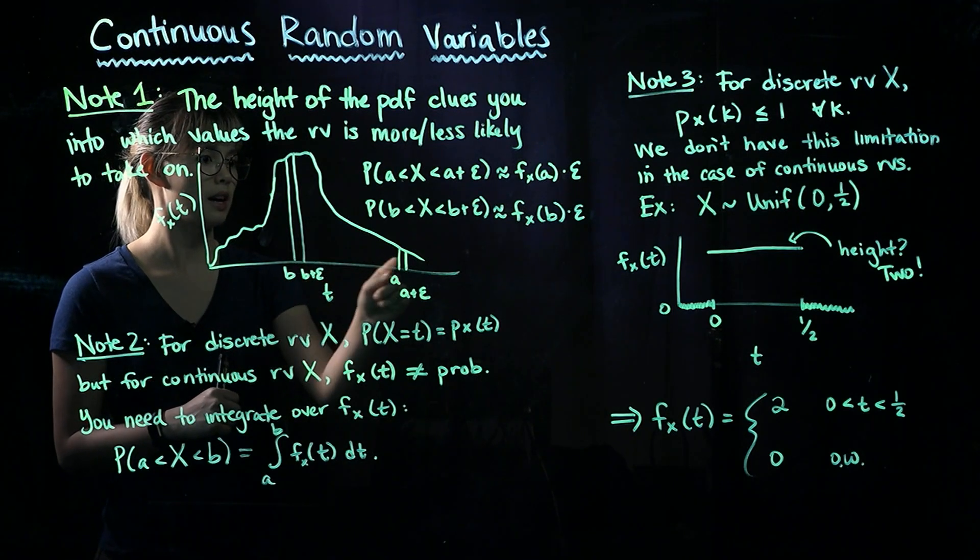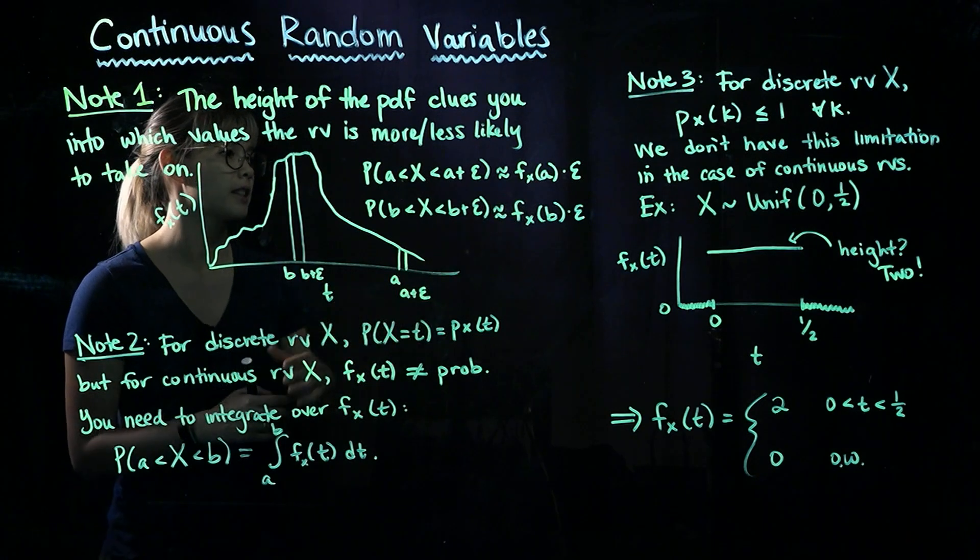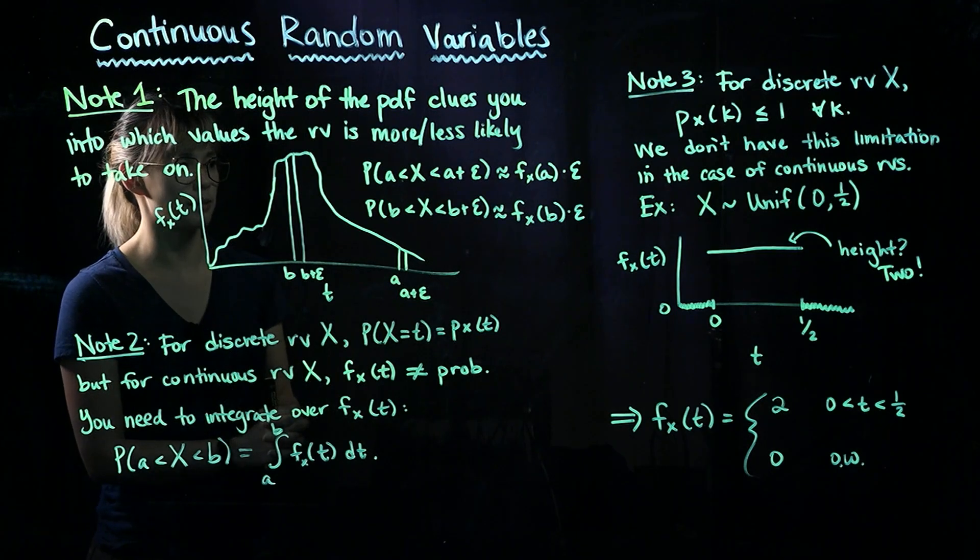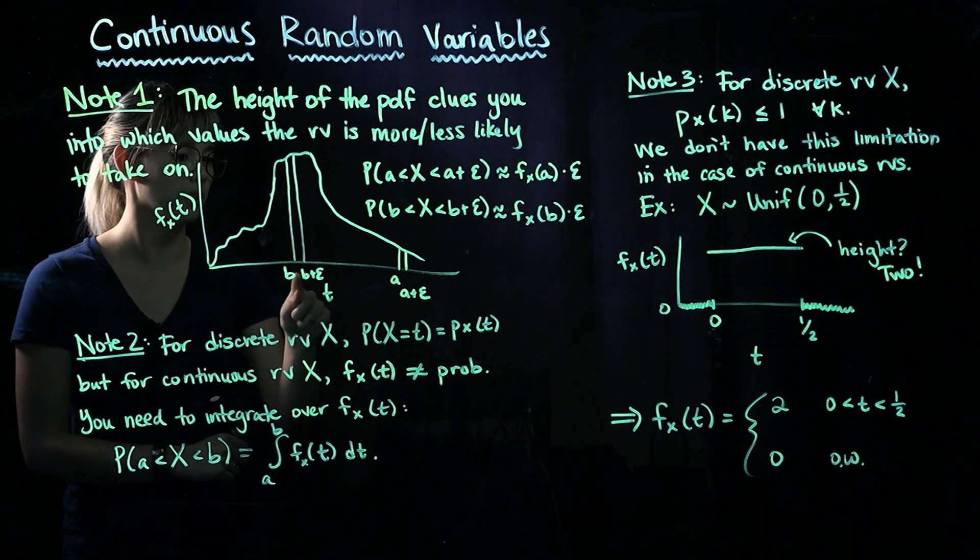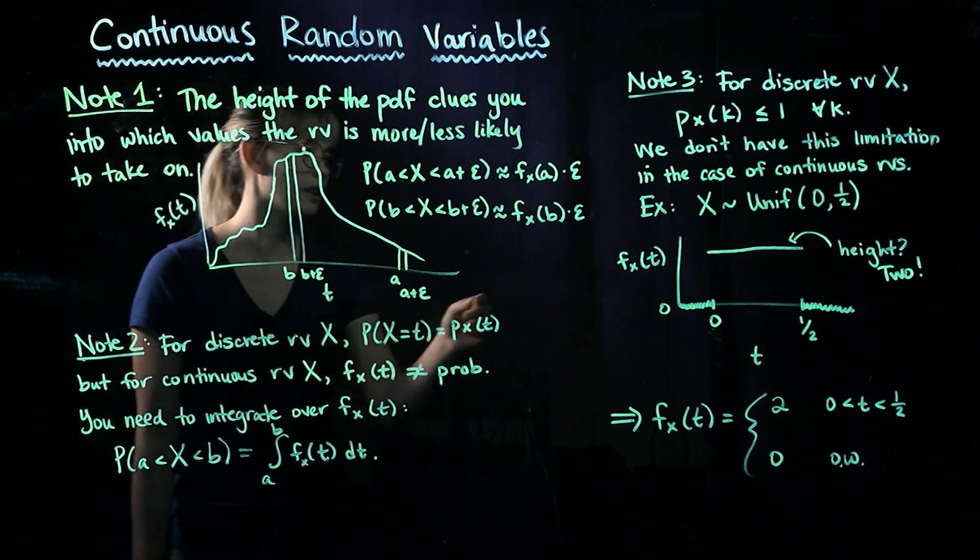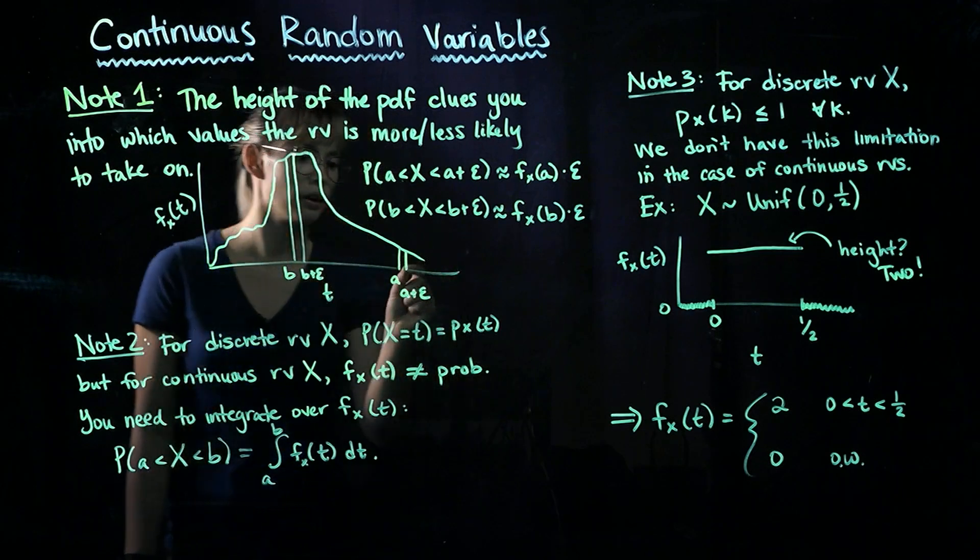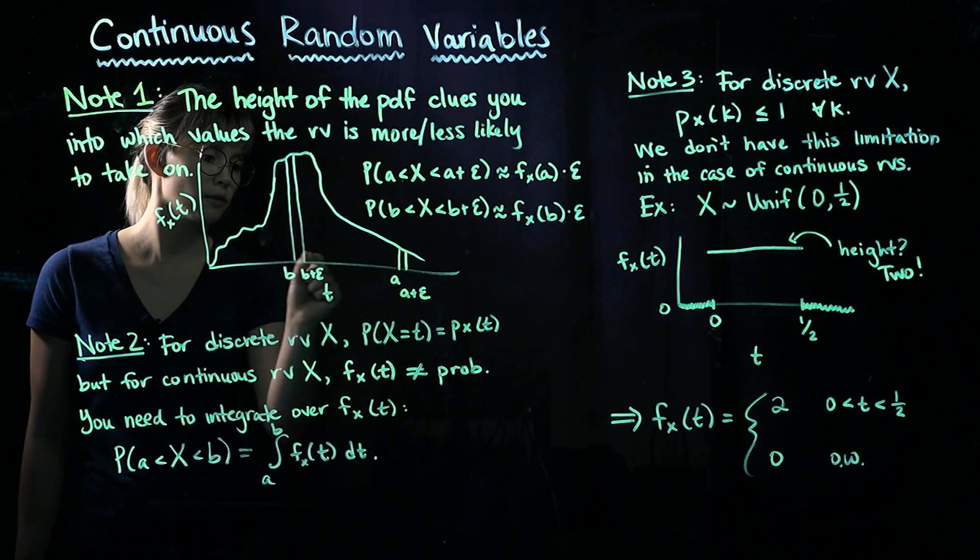So the probability that X is between A and A plus epsilon is about f(x) evaluated at A times epsilon. And similarly, the probability that X is between B and B plus epsilon is approximately the PDF evaluated at B times epsilon.